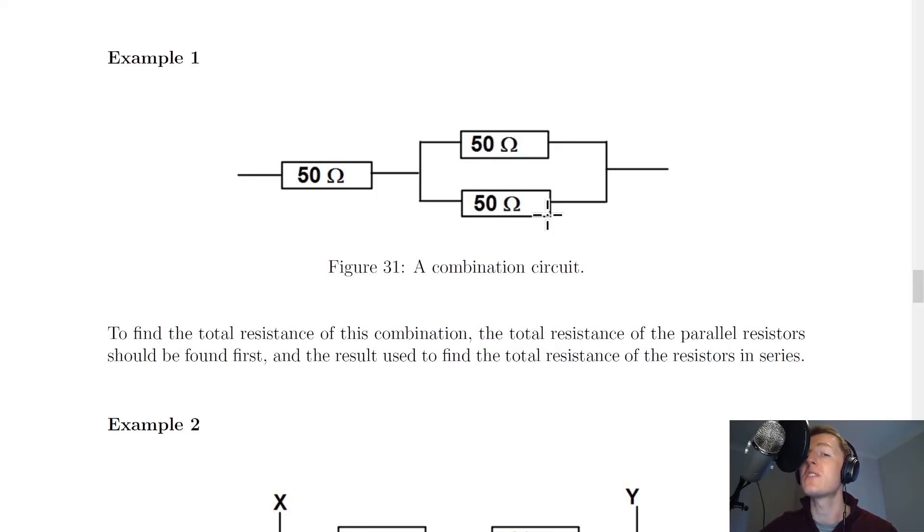Now let's say I had a third resistor in parallel there which was also 50 ohms, then that means I could use that top tip and take the value of one of my resistors, 50, and divide it by three in that case. But beware that this shortcut only works if the resistance values are identical.